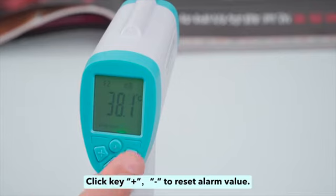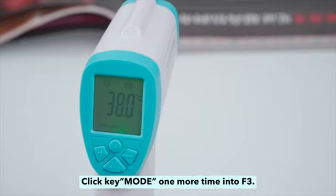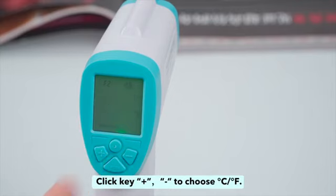Click plus or minus to reset the alarm value. Click key mode one more time to enter F3. Click plus or minus to choose Celsius.